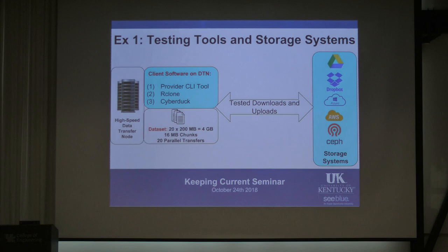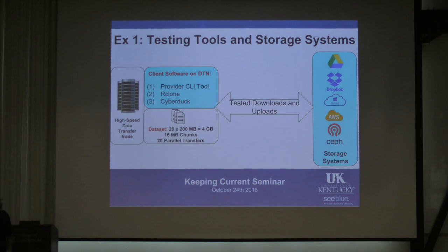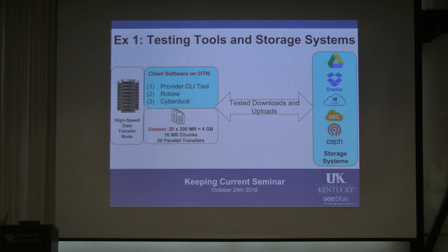What we changed is shown in the blue boxes: the data transfer tool used to send data, and the destination. On the left-hand side, we considered four public cloud providers — Dropbox, Google Drive, Azure, and AWS — and our local object store. We tested both downloads and uploads, running multiple experiments to each of those destinations.